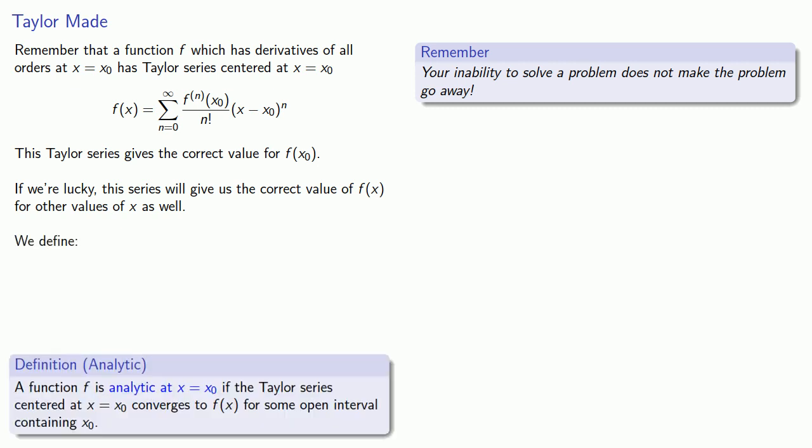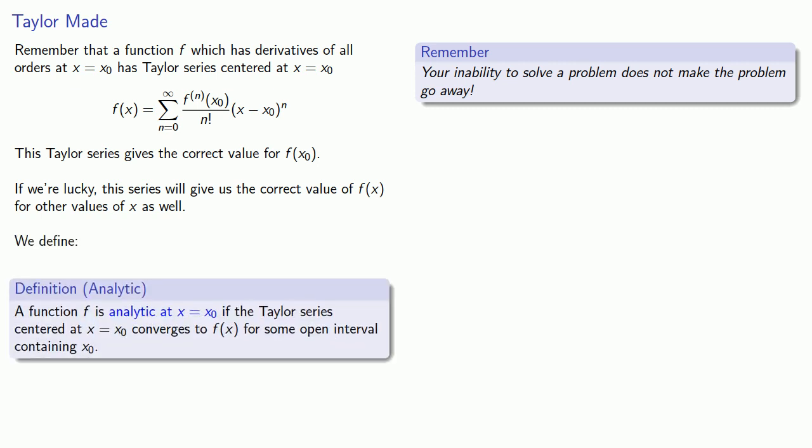We define the following: A function f is analytic at x equal to x0 if the Taylor series centered at x equals x0 converges to f of x. The short version of analytic is that within the interval of convergence, an analytic function has a Taylor series that converges to the function itself.